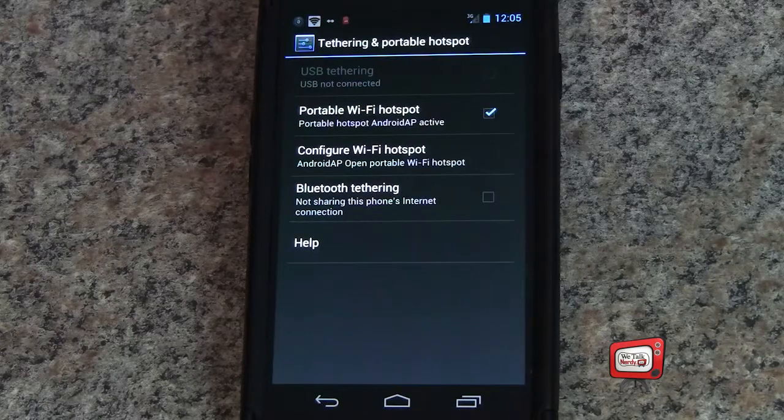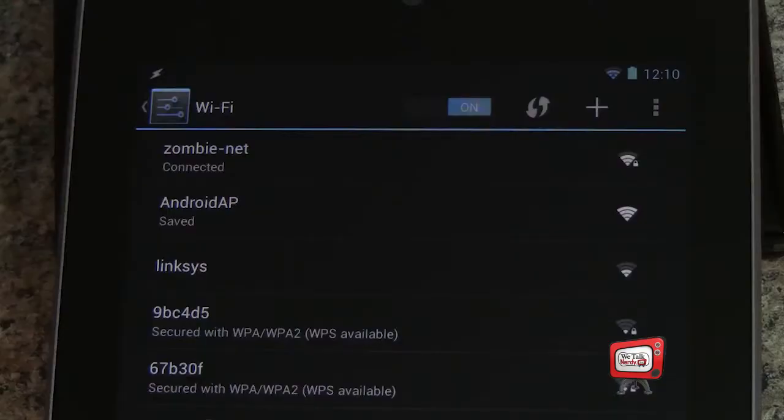Now, when I go to my Nexus 7, I see a new wireless hotspot. In this case, it's called Android AP. All I have to do is connect to it and I'm ready to go. I can use the phone's wireless network from my Nexus 7. And this may not be a perfect solution, but since I always have my phone with me anyway, and I have a pretty good data plan, like I said, of four gigabytes per month, it actually works really well for me. And I don't have to pay that extra money for the tablet when I'm away from my Wi-Fi network.